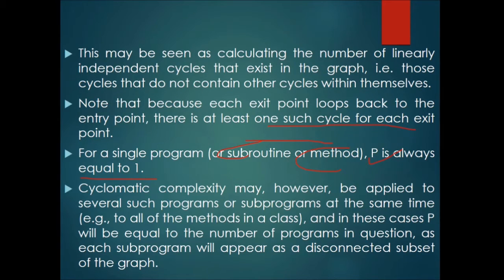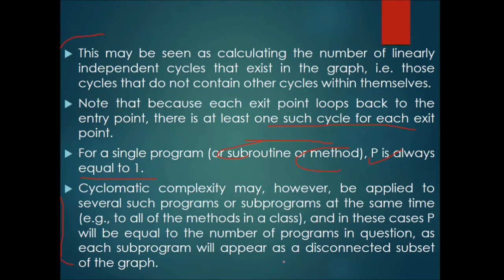Cyclomatic complexity may be applied to several subprograms at the same time — for example, all methods in a class. In these cases, P equals the number of subprograms, since each subprogram appears as a disconnected subset. When dealing with just one program, P is 1.